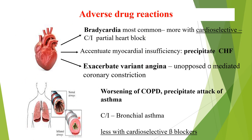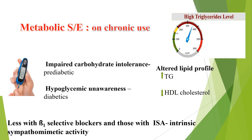Adverse effects on the lungs: beta blockers worsen COPD and can precipitate bronchial asthma, as they inhibit beta-2-mediated bronchodilation. They are contraindicated in bronchial asthma, with less risk from cardioselective beta blockers. Metabolic effects include impaired carbohydrate tolerance, especially in diabetic patients, and masking of hypoglycemic symptoms of insulin.